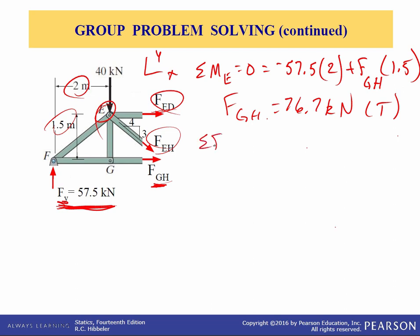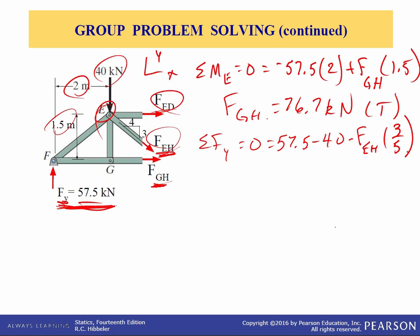Summing forces in the y direction set equal to zero: we have the reaction force at A of 57.5, minus the applied load of 40 kN, minus the y-component of F sub GH. It's a 3-4-5 triangle, so the y component is F sub GH times 3/5. Solving directly for F sub EH, it comes out to positive 29.2 kN — so it's in tension.